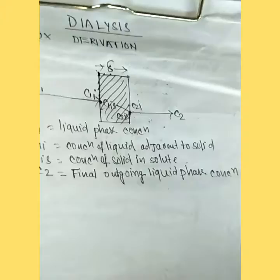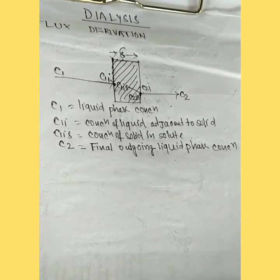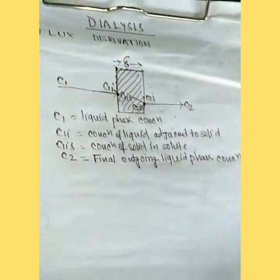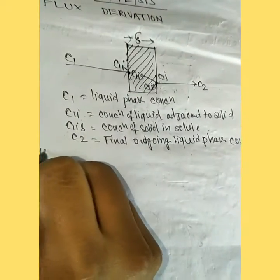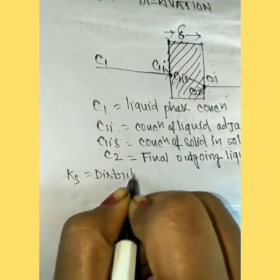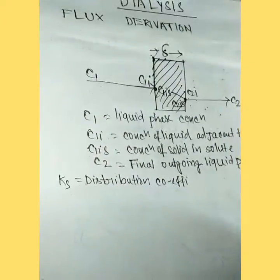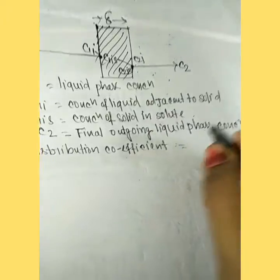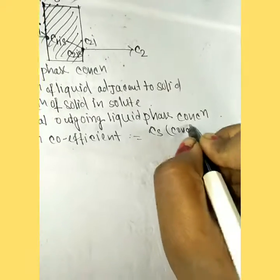For deriving this, we first need to know the mass transfer coefficient and the distribution coefficient. The distribution coefficient is denoted by Kf, which equals the concentration of solid divided by concentration of liquid.